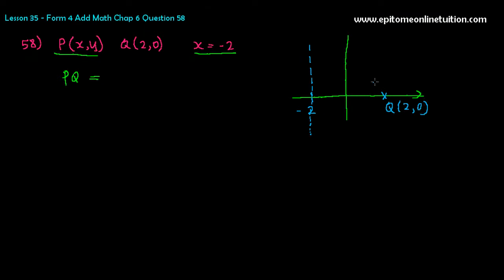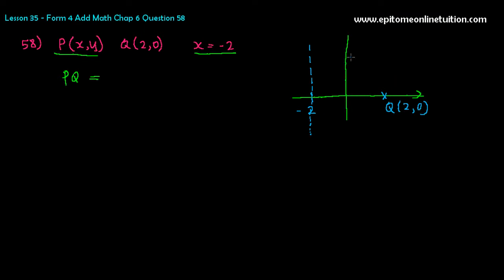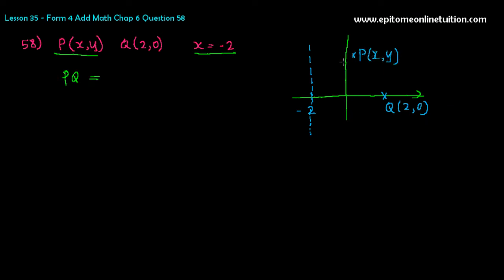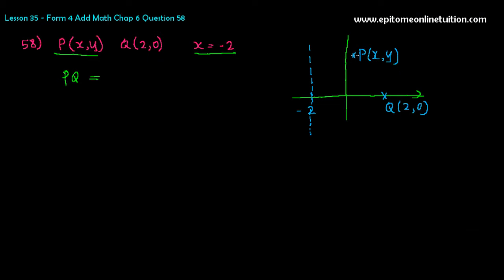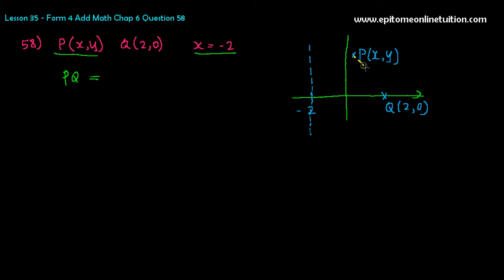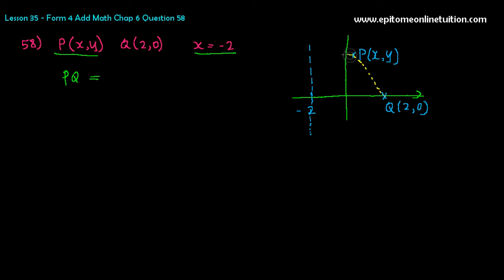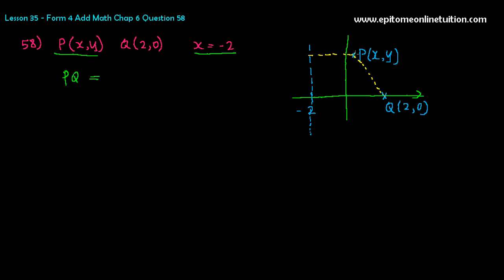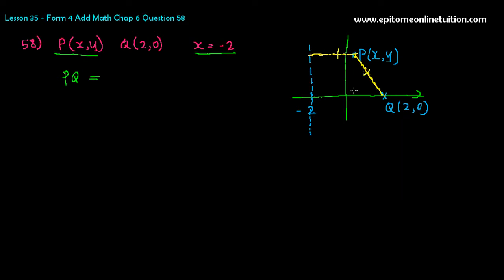Where should point P be? We don't know — we just know the distance from P to Q equals the distance from P to the line x equals negative 2. So let's say point P is here. I purposely drew it so that the distance from point P to Q is similar to the distance from P to the line x equals negative 2, and I've made those two lines the same distance.